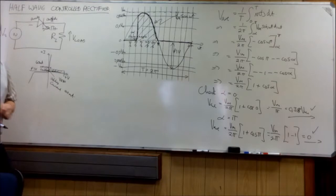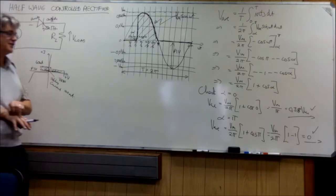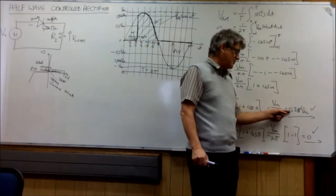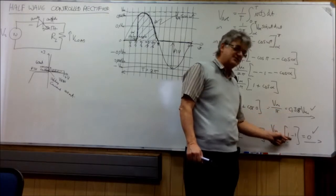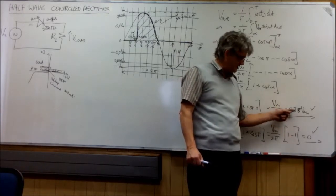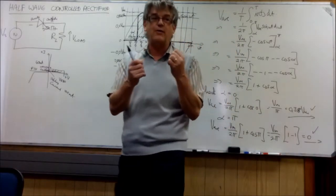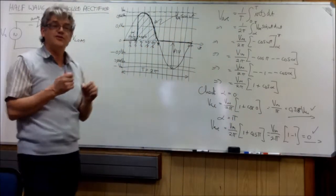So the delay angle affects the current. It does. Because it's affecting the average voltage. Here it was 0.318. And as the delay angle increased, so it went down to zero. So now you are controlling the power. Which power electronics is all about.